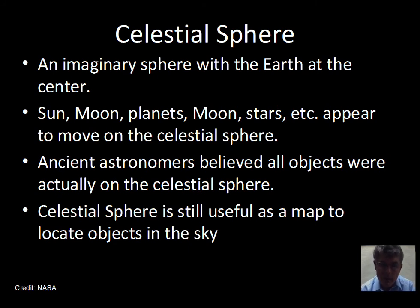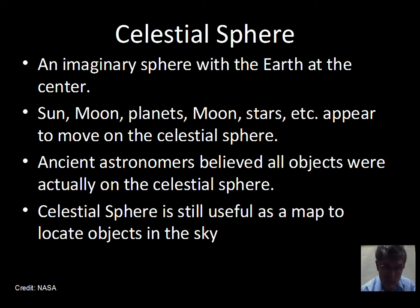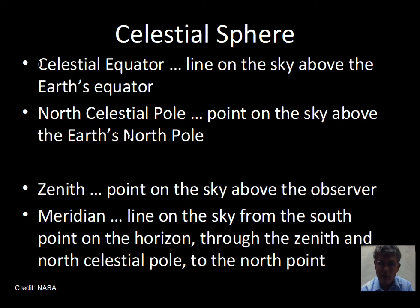The celestial sphere serves a purpose for discussion of where things are located in the sky. If you want to call your neighbor or your friend in California, we can use the celestial sphere as a map to locate objects on the sky. I want to go over that just a little bit.